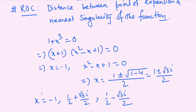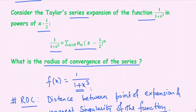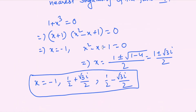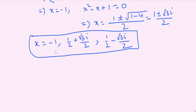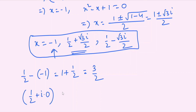The point of expansion is 1/2. We find the distance from 1/2 to each singularity. First: |1/2 − (−1)| = |3/2| = 3/2. Second: distance from (1/2, 0) to (1/2, √3/2) in the complex plane = √((1/2 − 1/2)² + (0 − √3/2)²) = √(3/4) = √3/2.